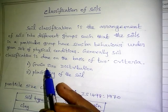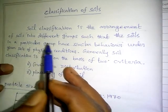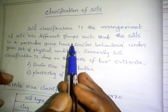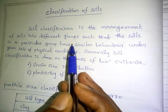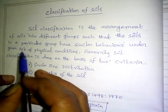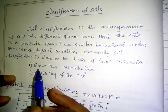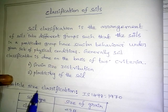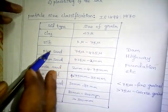The two criteria for soil classification are: grain size distribution and plasticity of soil. Soils with similar properties and similar behavior under a given set of physical conditions are classified together. Classification can be based on plasticity or grain size.